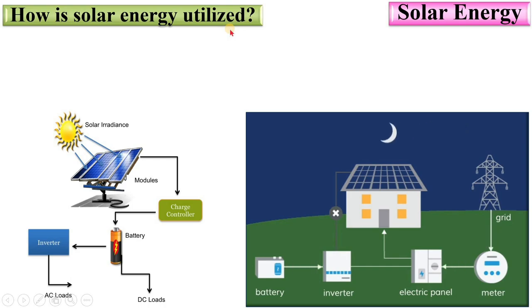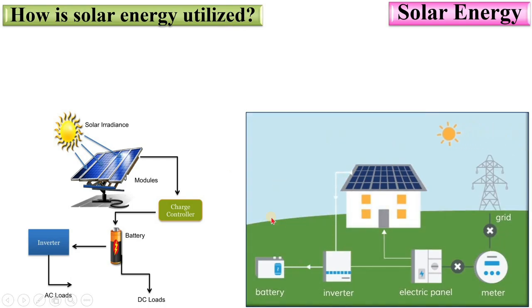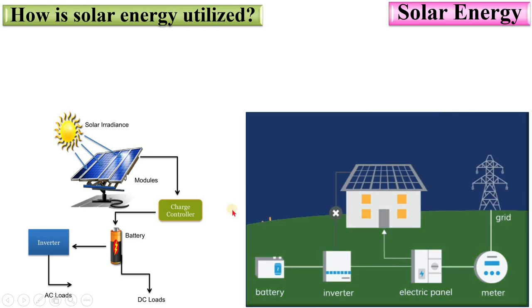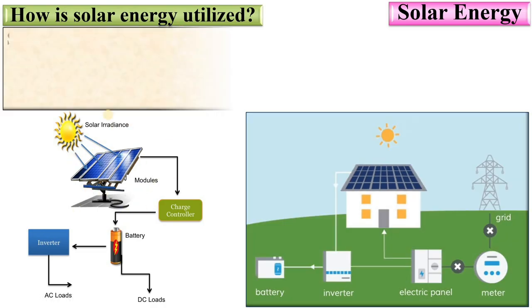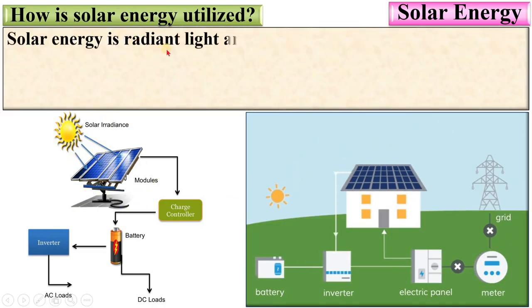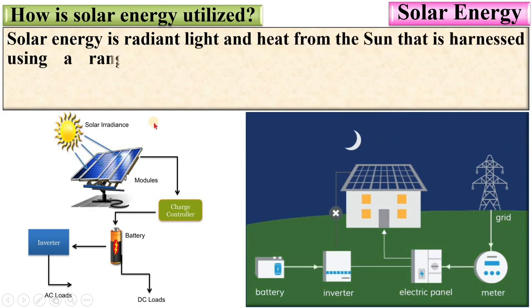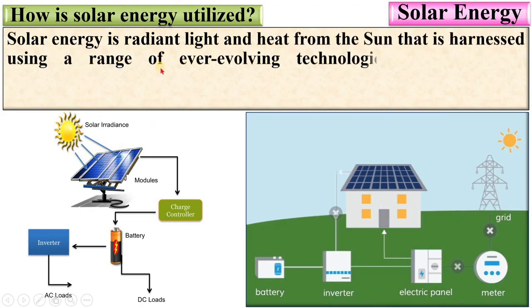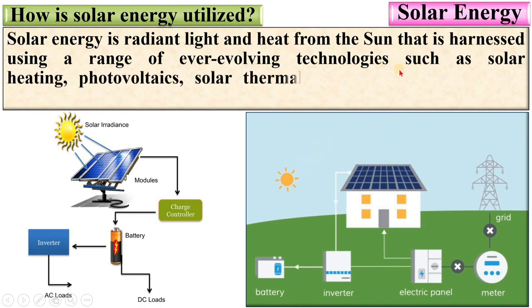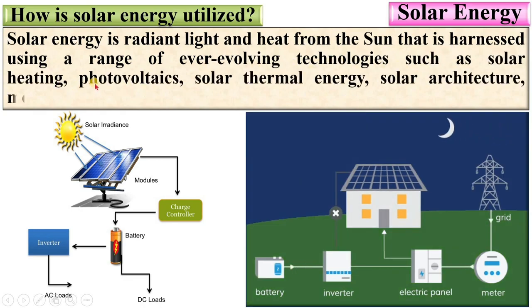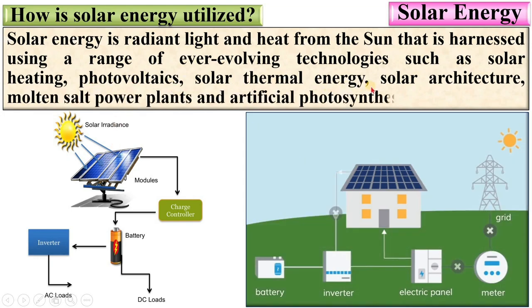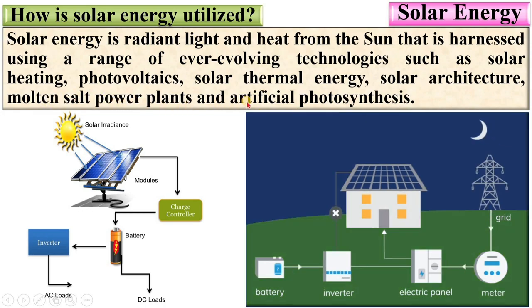How is solar energy utilized? With the help of this figure, you can understand the solar energy utilization. Solar energy is radiant light and heat from the sun that is harnessed using a range of ever-evolving technologies such as solar heating, photovoltaics, solar thermal energy, solar architecture, molten salt power plants, and artificial photosynthesis.